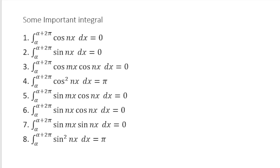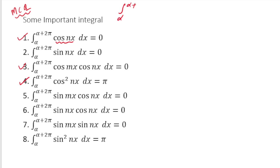Before solving problems related to Fourier series, there are some important integrals that are sometimes asked directly in MCQ questions. I'm going to prove some of them — the first, third, and fourth — and the rest are similar so you can prove them yourself. If we integrate cos(nx) in the interval α to α+2π, the integration equals zero.